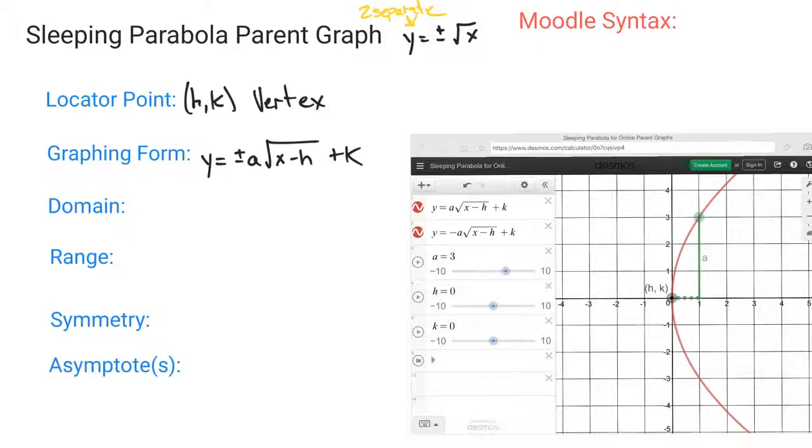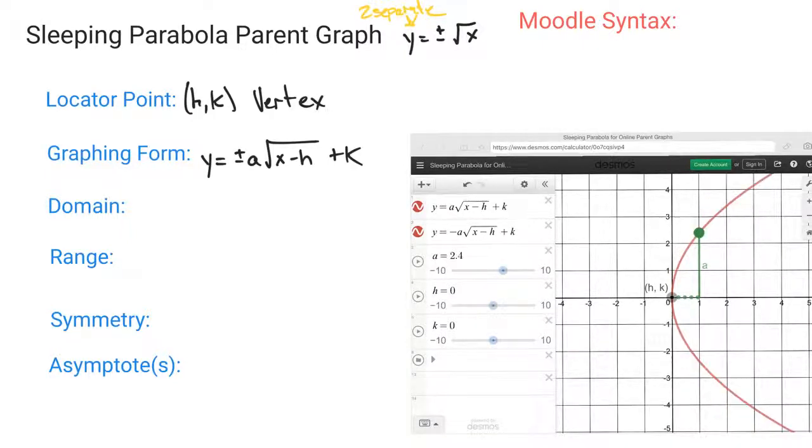Now this domain is also similar to our square root. You cannot do the square root of a negative number ever. So wherever your h value is, that will determine what your domain is, because you can see it's restricted. I don't have anything to the left of that h value, but these graphs move on forever to the right of that a value.